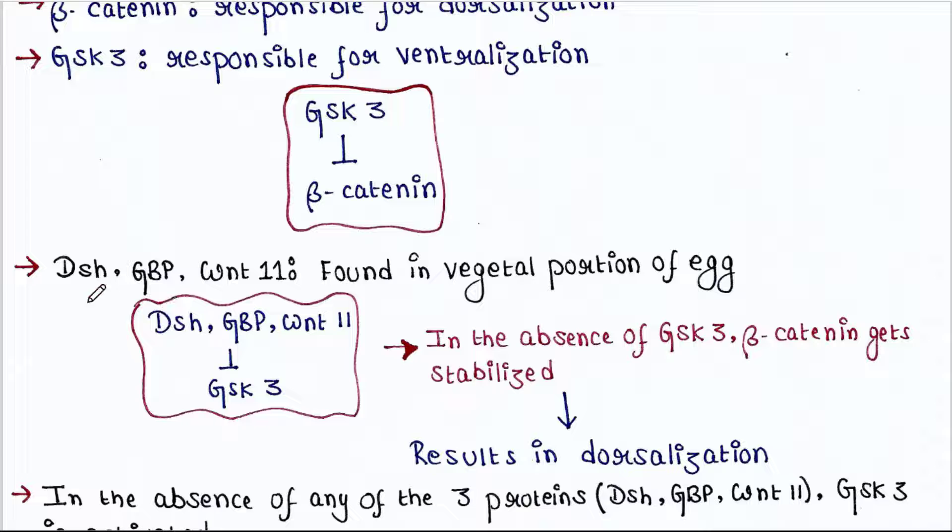Other three proteins—Dsh, GBP, and Wnt11—they are called accessory proteins. They are found in vegetal portion of egg. These three proteins actually block the expression of GSK3. When GSK3 is absent, beta-catenin gets stabilized, which results in dorsalization because beta-catenin is responsible for dorsalization.